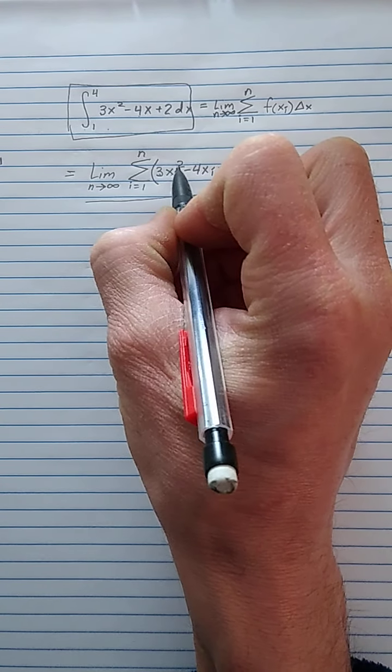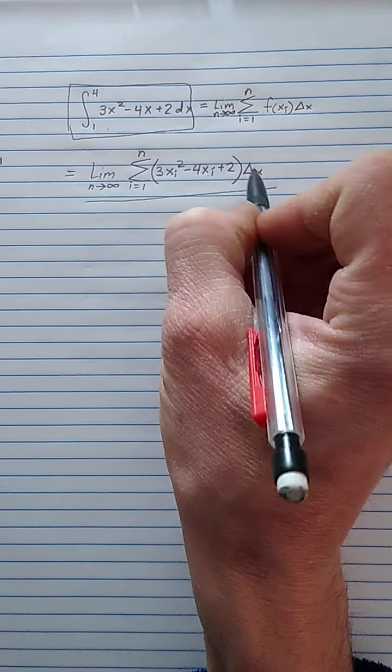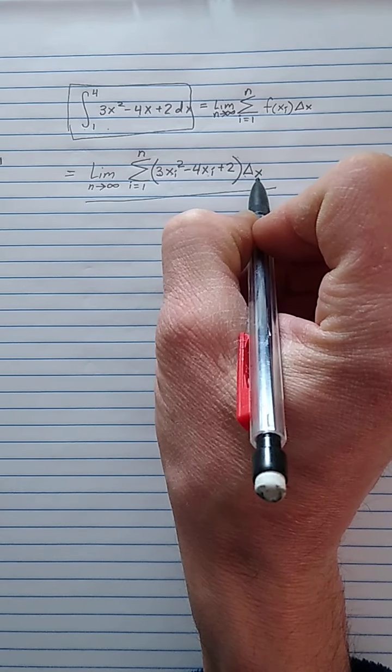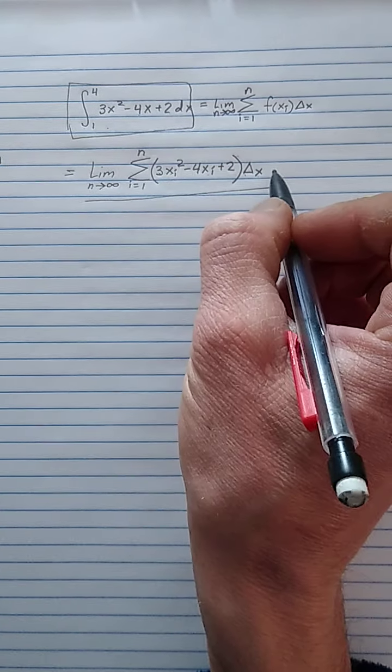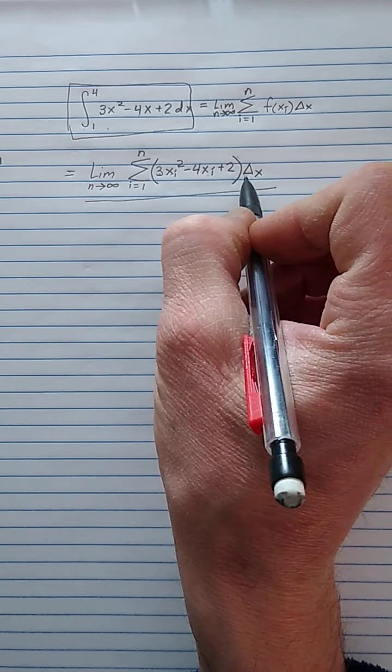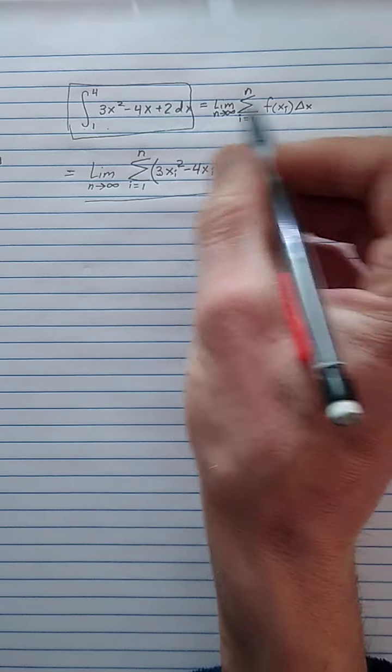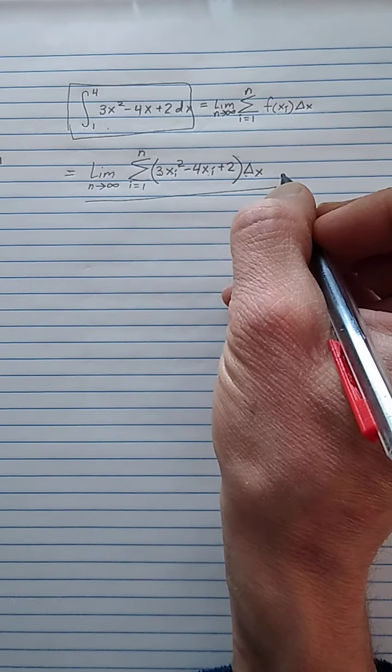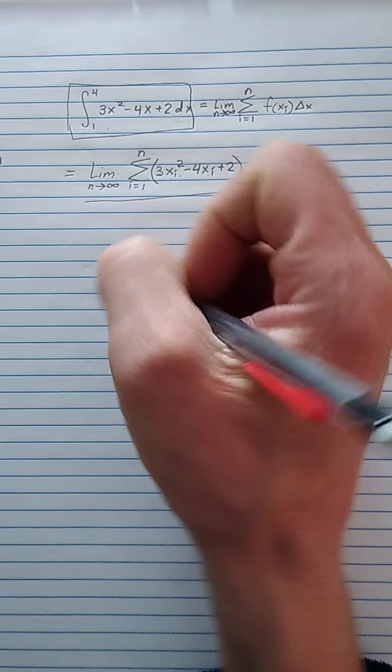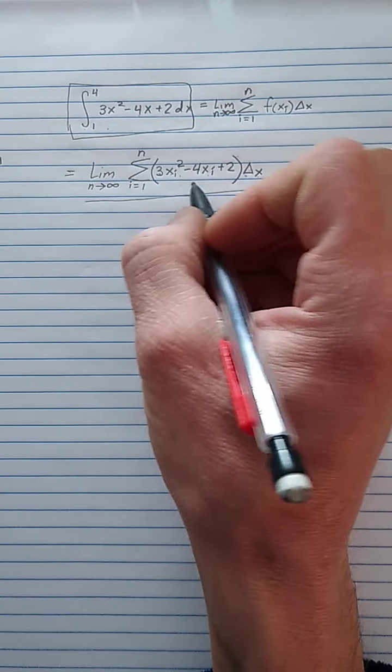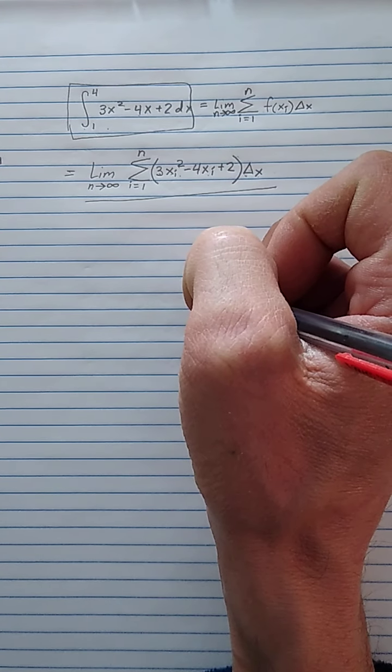So if it's given in this form, it's not too bad. If we actually write out the x sub i as the interval divided by n, and then multiply it in, then it gets a little bit more difficult. But in this form, usually not too bad.